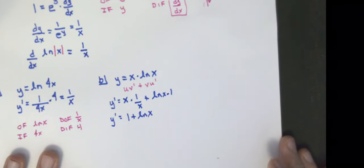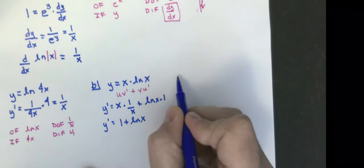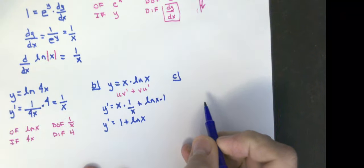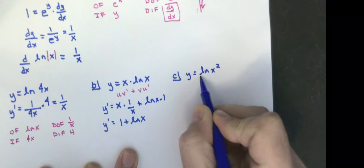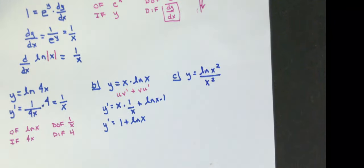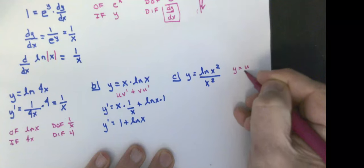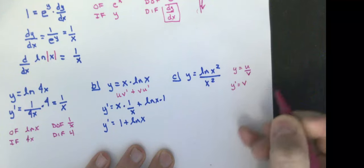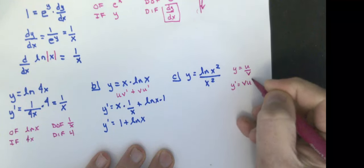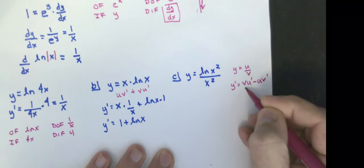The third one: y equals the natural log of x squared over x squared. This is a quotient rule problem. Where if I have y equals u over v, y prime is the denominator times the derivative of the numerator, minus the numerator times the derivative of the denominator, all over the denominator squared.